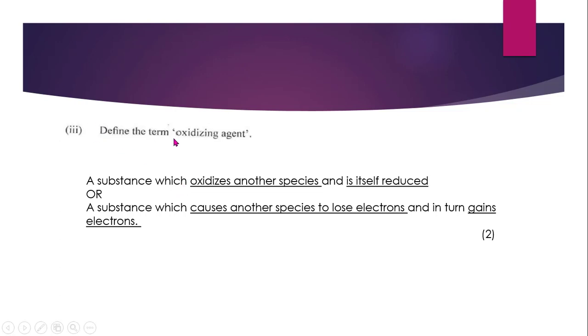Part three, define the term oxidizing agent. This was worth two marks. I put two definitions of the term oxidizing agent here. Firstly, an oxidizing agent is a substance which oxidizes another species and is itself reduced. Or a substance which causes another species to lose electrons and in turn gain electrons. When you answered your question, those of you who got only one mark, I highlighted it so you would see exactly where you got one mark.